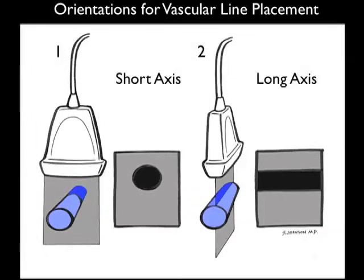Here to the left we see the short axis configuration with the probe perpendicular to the vessel. Notice that the vessel will appear on the ultrasound screen as a circle, as the vessel will be cut end on. To the right we see the long axis configuration, with the probe placed along the long axis course of the vessel.